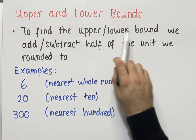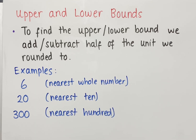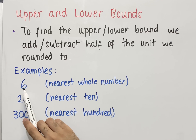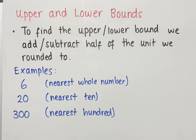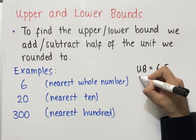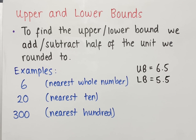To find the upper bound, add half of the unit we rounded to; to find the lower bound, subtract half of the unit we rounded to. For example, for 6 rounded to the nearest whole number: whole numbers go up in 1s, so the unit is 1. Half of 1 is 0.5. The upper bound is 6 + 0.5 = 6.5, and the lower bound is 6 − 0.5 = 5.5, which matches our previous example.